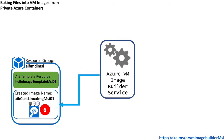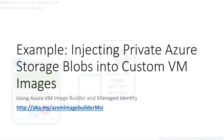The last step is to create a VM from this image. If it's worked successfully, you should see that the message of the day has been updated when you log into that image. Thank you for listening to this overview of the end-to-end example — now it's time for you to get started. Go to aka.ms/azvmimagebuilder.msi.